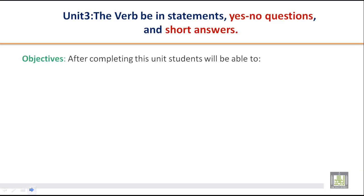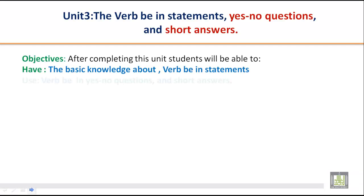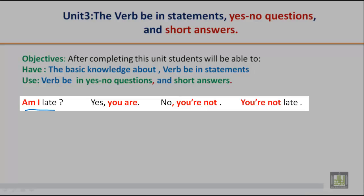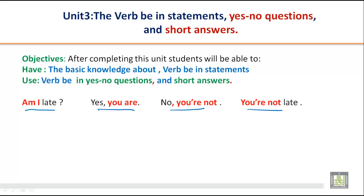Let us move on to the next exercise. Here we will practice the verb 'be' in statements — a kind of revision of what we did in unit one — including yes/no questions and short answers. For example: 'Am I late? Yes, you are. No, you are not. You are not late.'